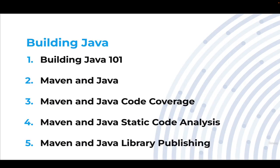The next section gets into building Java itself, starting with the very basics of Java build theory — how do we go from Java files and turn them into a JAR file? Then we're going to introduce Maven and its concepts: its lifecycles, goals, and phases, ultimately covering things like code coverage integration and code coverage metrics, and common tools like PMD for static code analysis. Eventually, we're going to take that well-tested, high-quality JAR file and publish it as a library to a Maven repository.